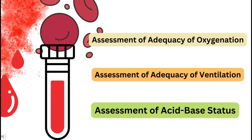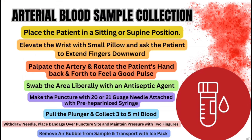Everyone dealing with ABGs — arterial blood gas analysis — must know about the collection of the blood sample, because it is not like other tests. We can perform many routine tests from venipuncture blood, but we need arterial blood for accurate oxygenation assessment, ventilation assessment, and acid-base status checking. That is why arterial blood collection is a tricky thing, as a lot of skill is required.